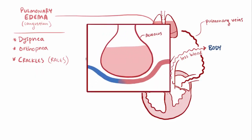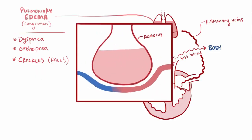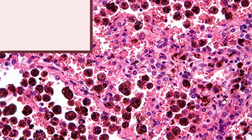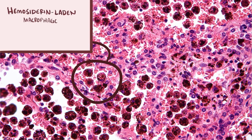If enough fluid fills some of these capillaries in the lungs, they can actually rupture, leaking blood into the alveoli. Alveolar macrophages then eat up these red blood cells, which causes them to take on a brownish color from iron buildup. These are then called hemosiderin-laden macrophages, also known as heart failure cells.